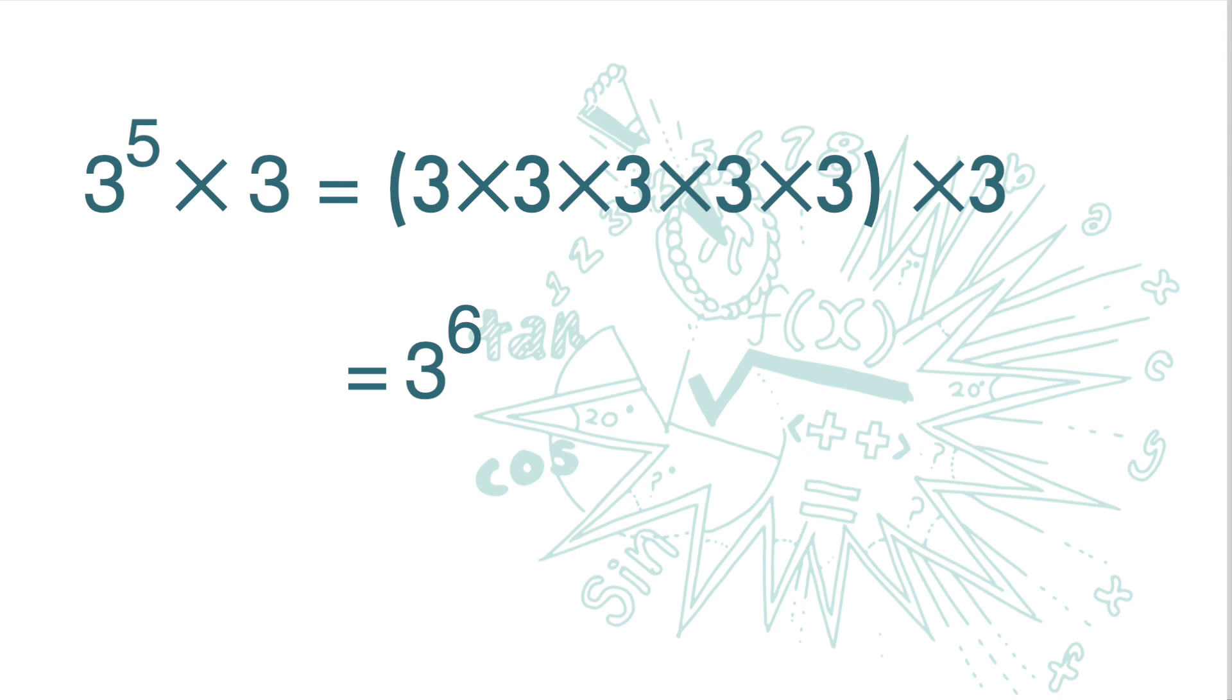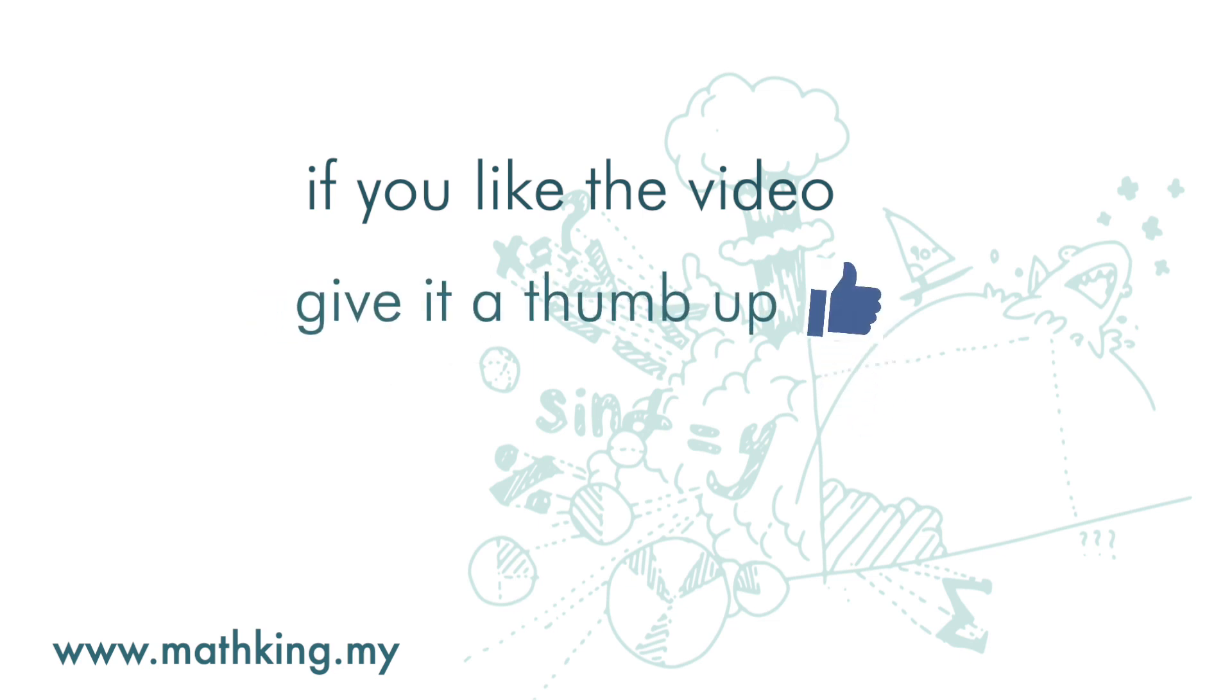Let's look at the indices. 3 to the power of 5 times 3, here the index of 3 is 1, representing one 3. But usually we don't write down the index 1. But when we do the multiplication of indices, we need to remember the 1 up there. So it is 5 plus 1 to get 3 to the power of 6. So we need to remember that a is actually a to the power of 1, so we need to remember the 1 up there.